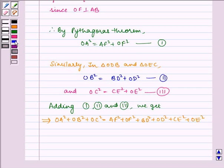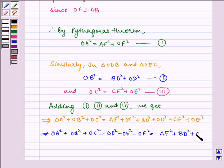That is, which implies, OA² + OB² + OC² - OD² - OE² - OF² = AF² + BD² + CE².